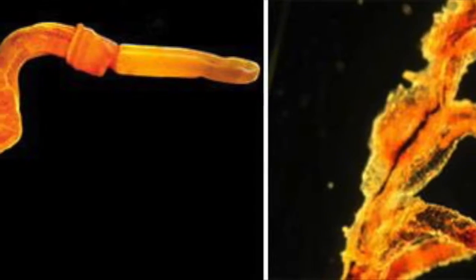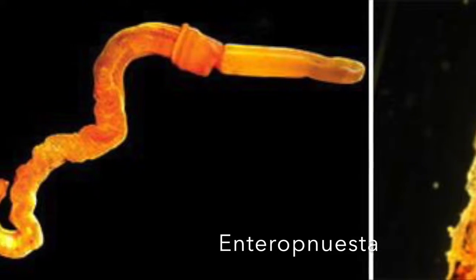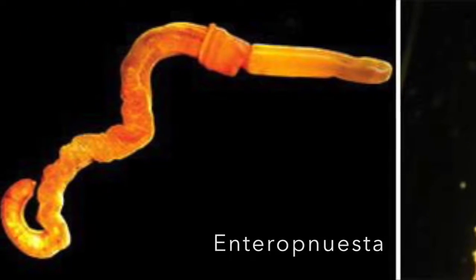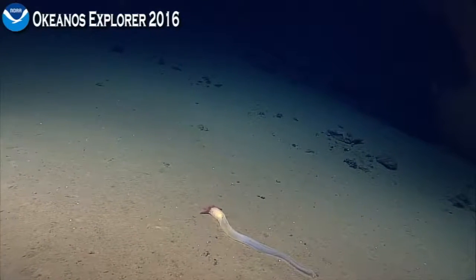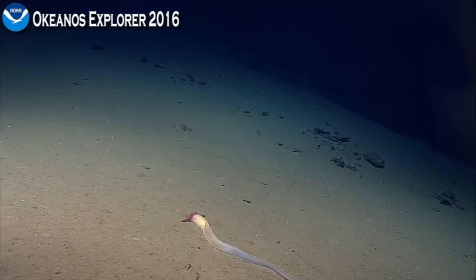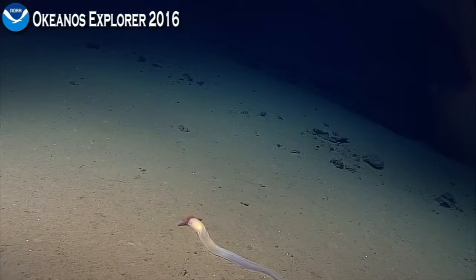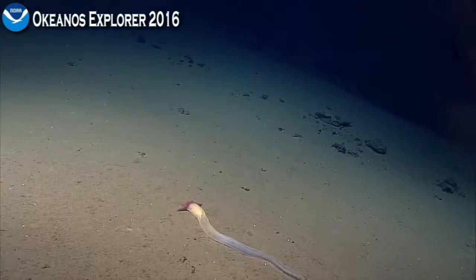Hemichordata are three-tissue-layered eucoelomates with bilateral body symmetry. They possess a partially open circulatory system and are supported by a hydrostatic skeleton.